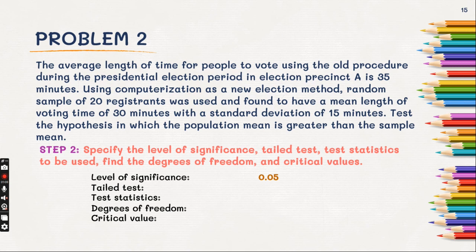Our alternative hypothesis is greater than, so this is a one-tailed test, specifically right-tailed. And since our sample size is only 20, the test statistics to be used is the T-test.